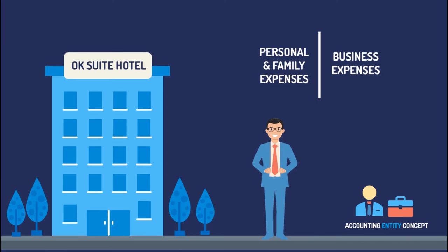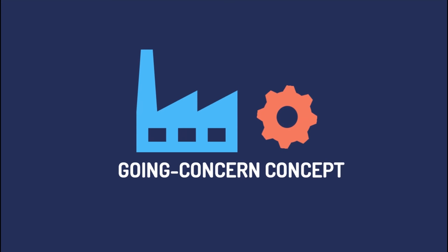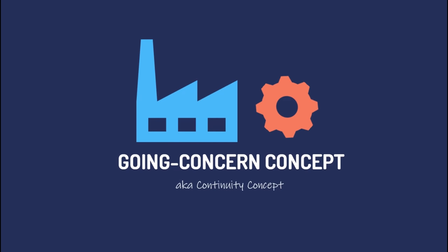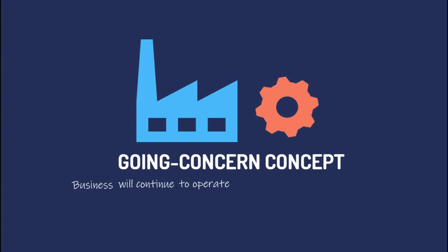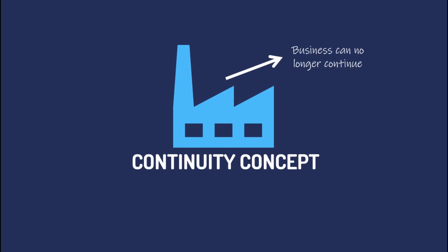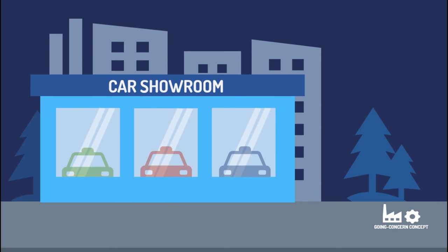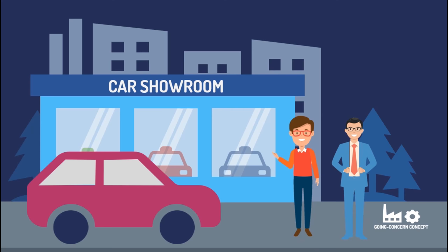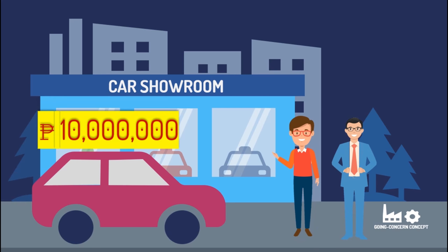Let's move on to our next accounting assumption, which is the going concern concept, also called the continuity concept. This assumption simply tells us that businesses are assumed to continue operating over an indefinite period of time. However, if there is concrete evidence that the business can no longer continue, the continuity concept should be abandoned. Let's take a look at the application of the continuity concept. The car that Mr. Oyong Kabodok purchased for 10 million should not be recorded as an outright expense.